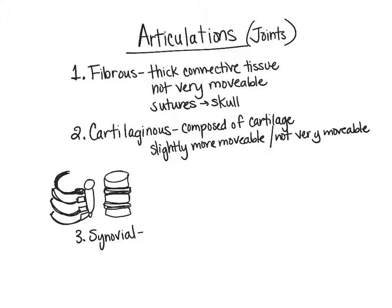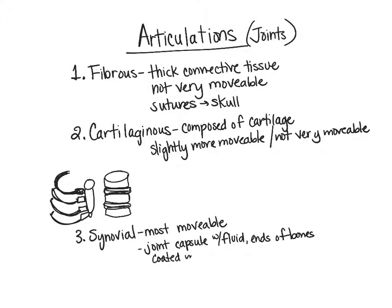Synovial joints are those we think of most often when we think of joints, and they are the most movable. They contain a joint capsule with fluid inside, and the ends of the bones are coated with cartilage to protect them. These joints are often supported by ligaments, which are a type of connective tissue that connects bone to bone.